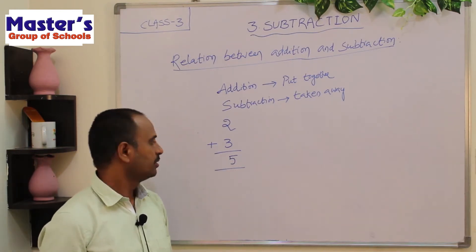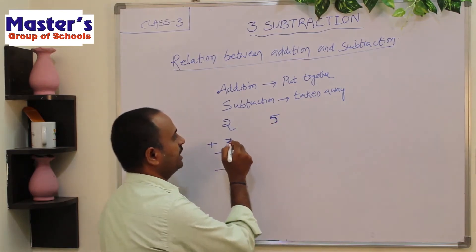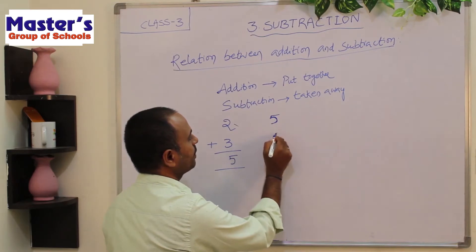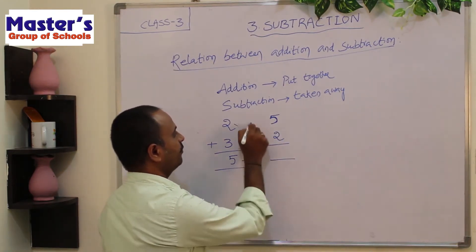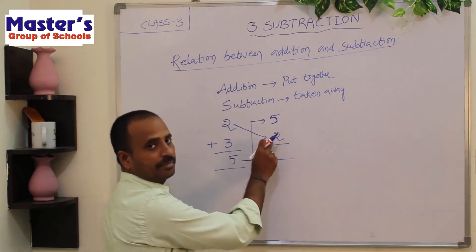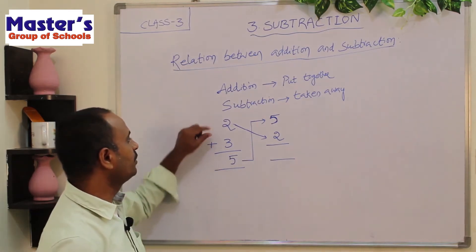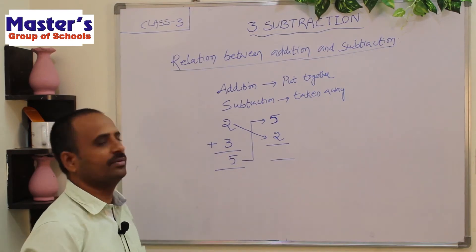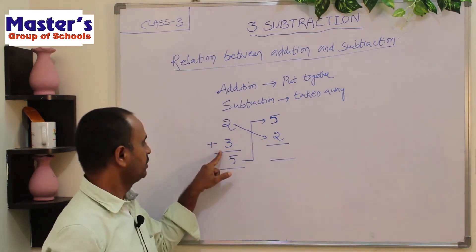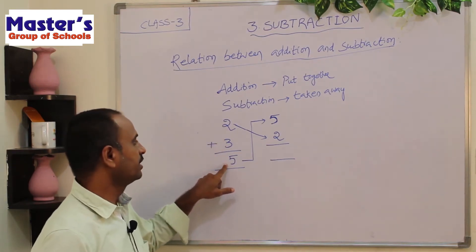Now if you subtract from this sum — that means if you subtract 5, write 5 first and subtract any number. If you take away 2 from 5, write 2 here. If you subtract the first number from the sum, then you will get the second number in the addition. So I have added 2 numbers, the answer is 5. Now I will subtract any one of these 2 numbers from the sum, and I will get the other number. If I subtract 2 from 5, I will get the second number 3.